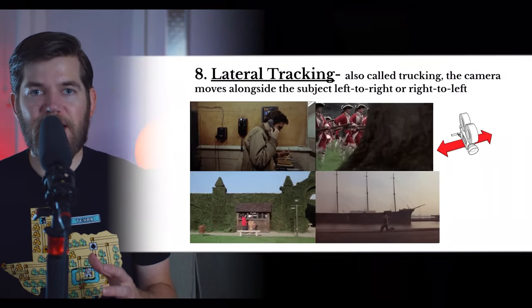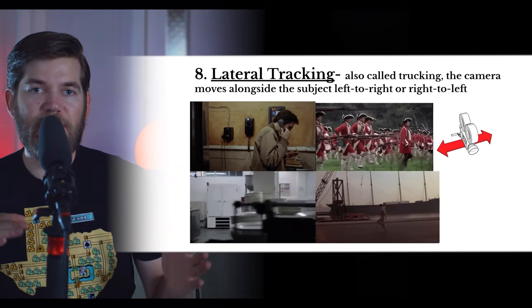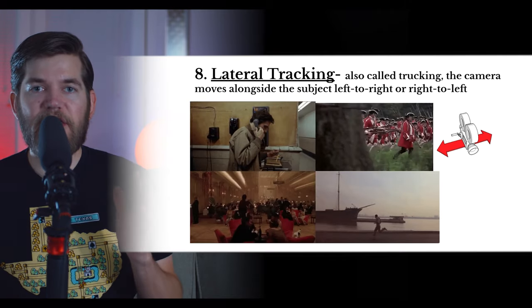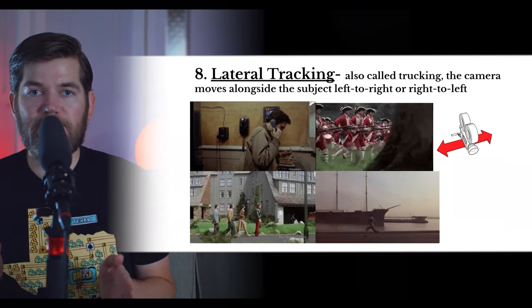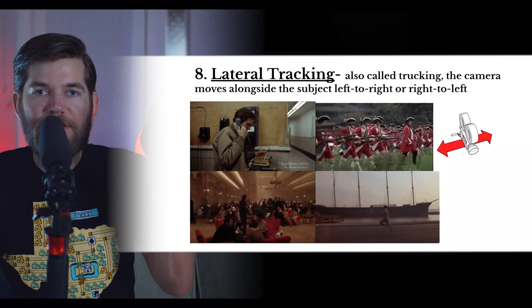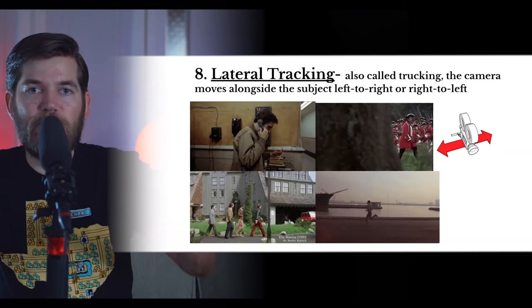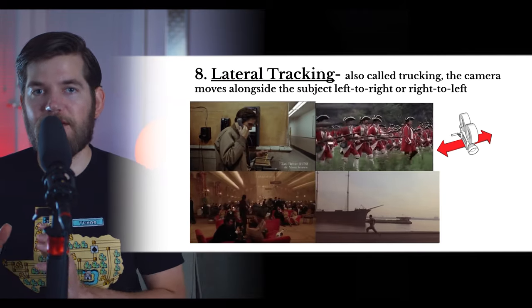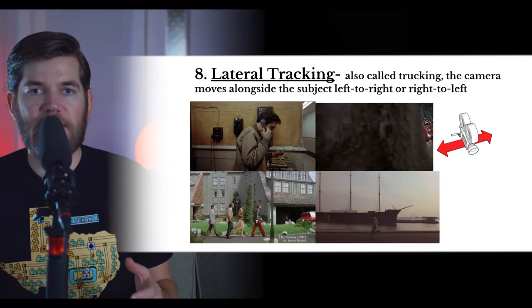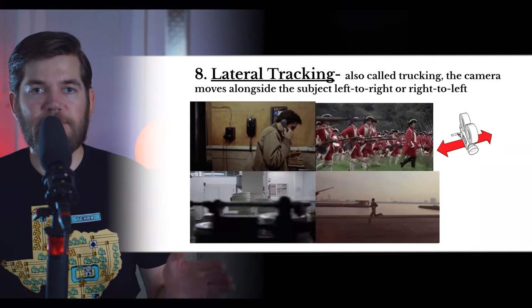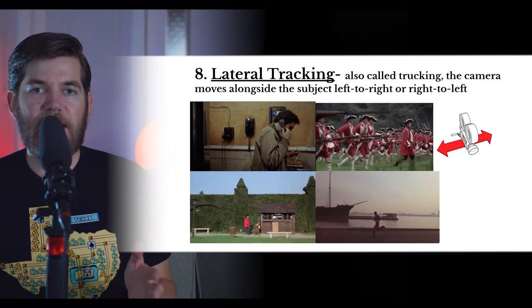Starting with the lateral tracking shot. The lateral tracking shot moves to follow a subject or through a location from left to right. Similar to the pedestal, the lateral tracking shot should not be confused with a pan. The lateral tracking shot does not have any rotation — it merely stays focused forward while moving from left to right or right to left. This camera movement can reveal more of a location or track a subject following it left to right or right to left.